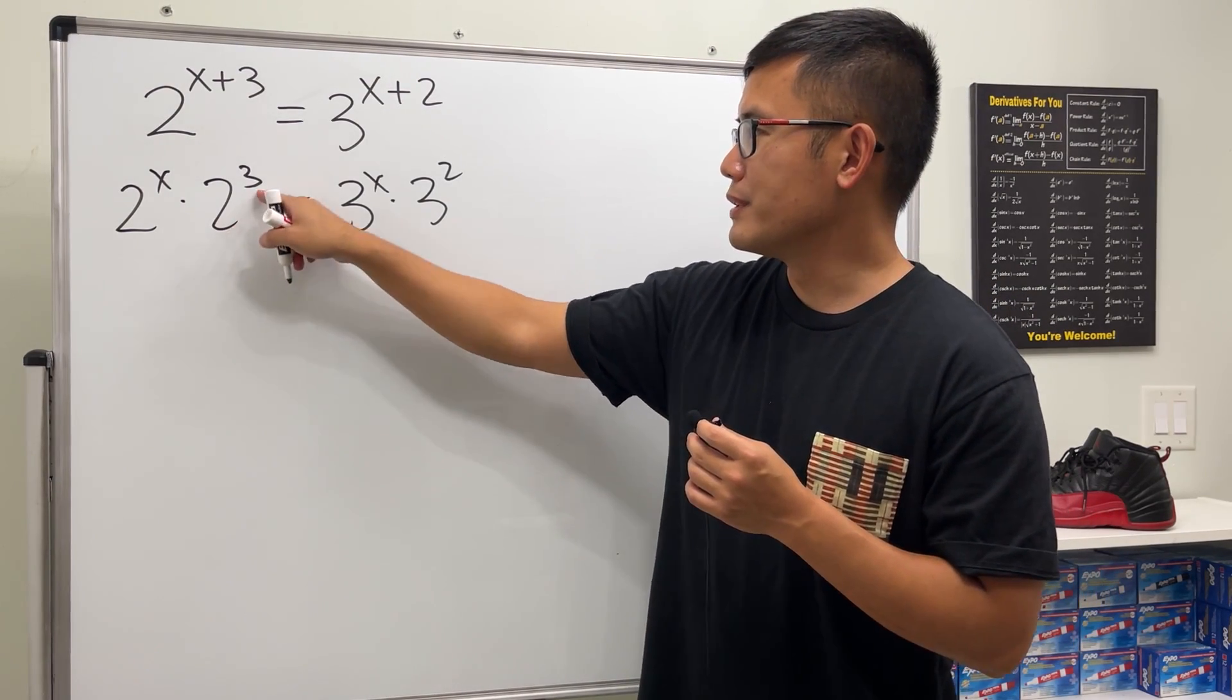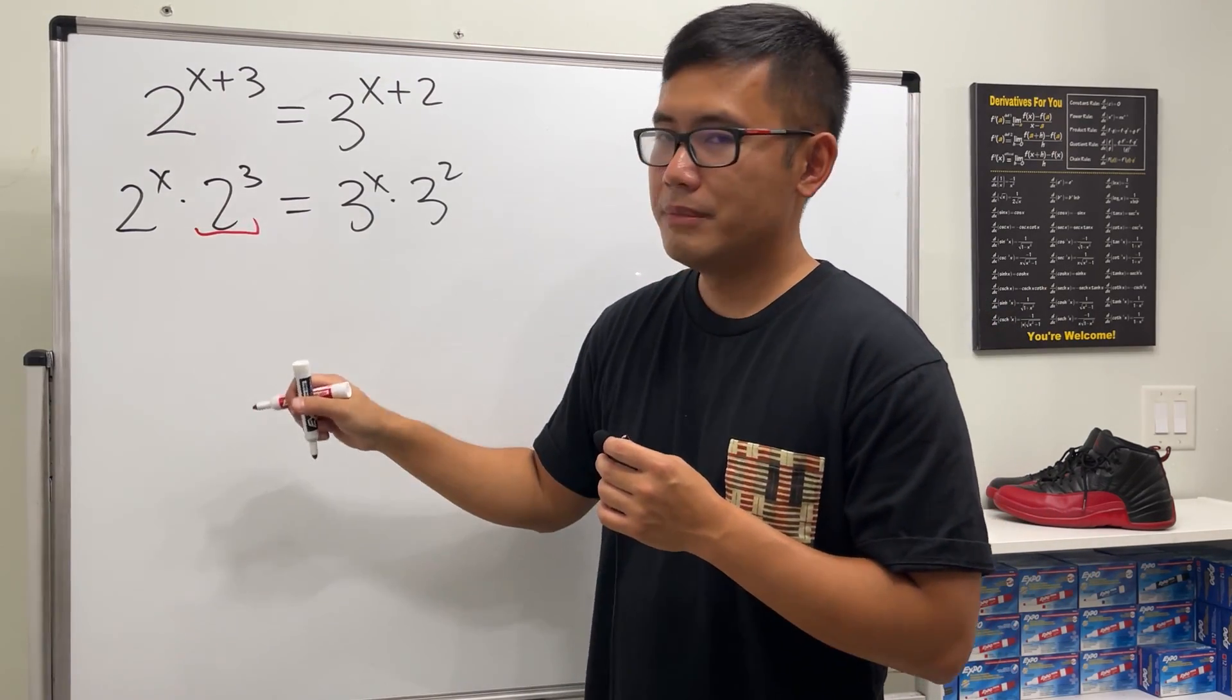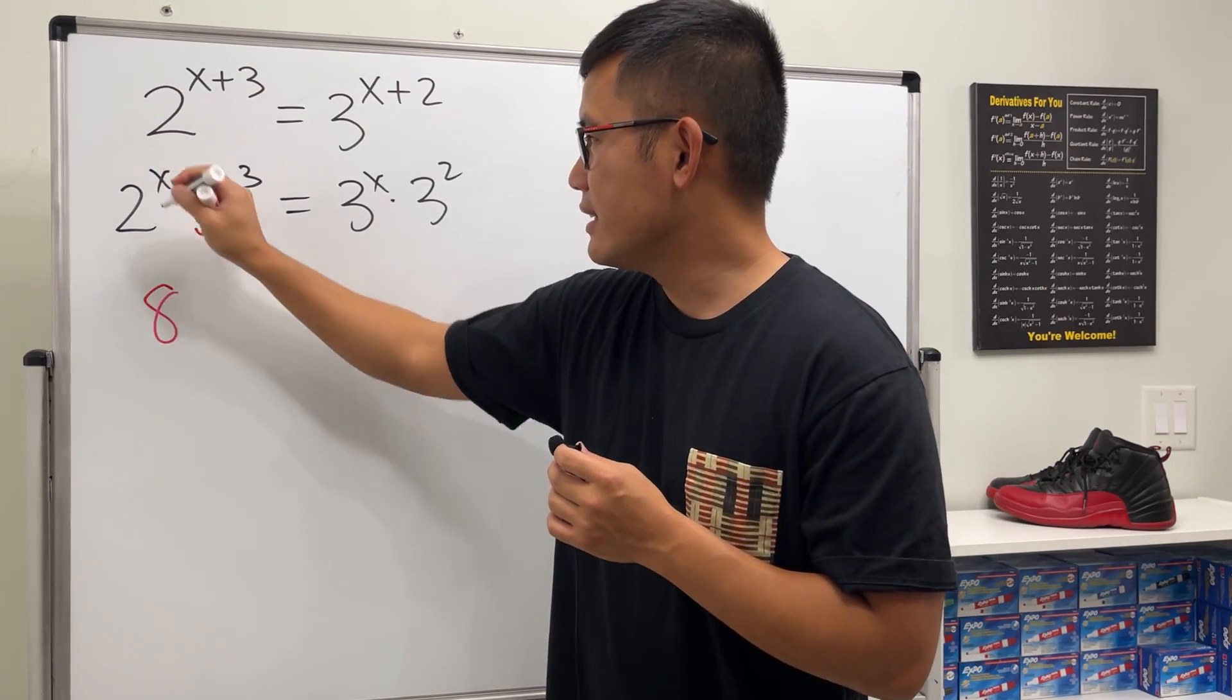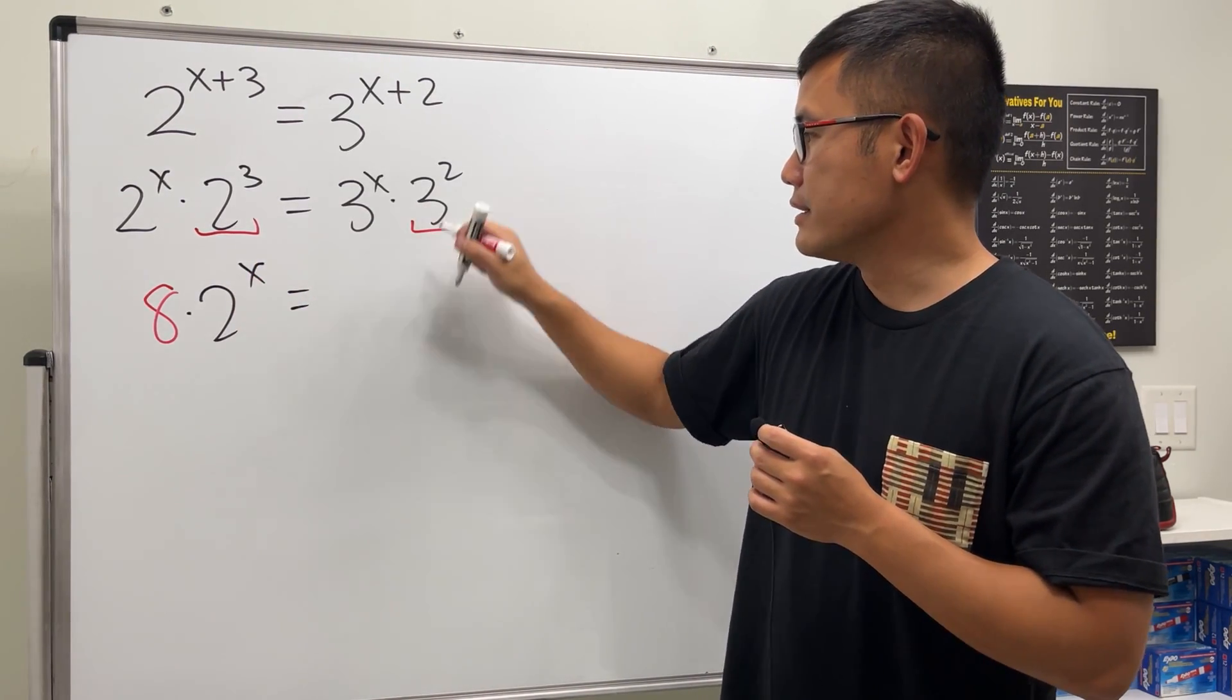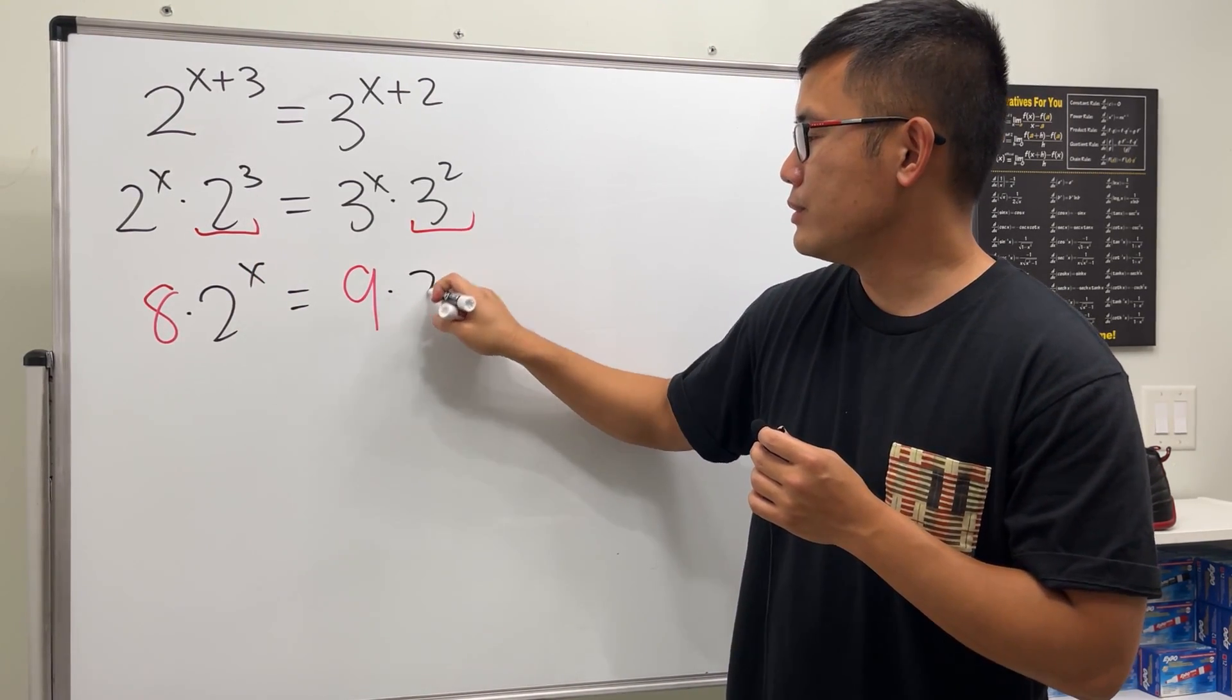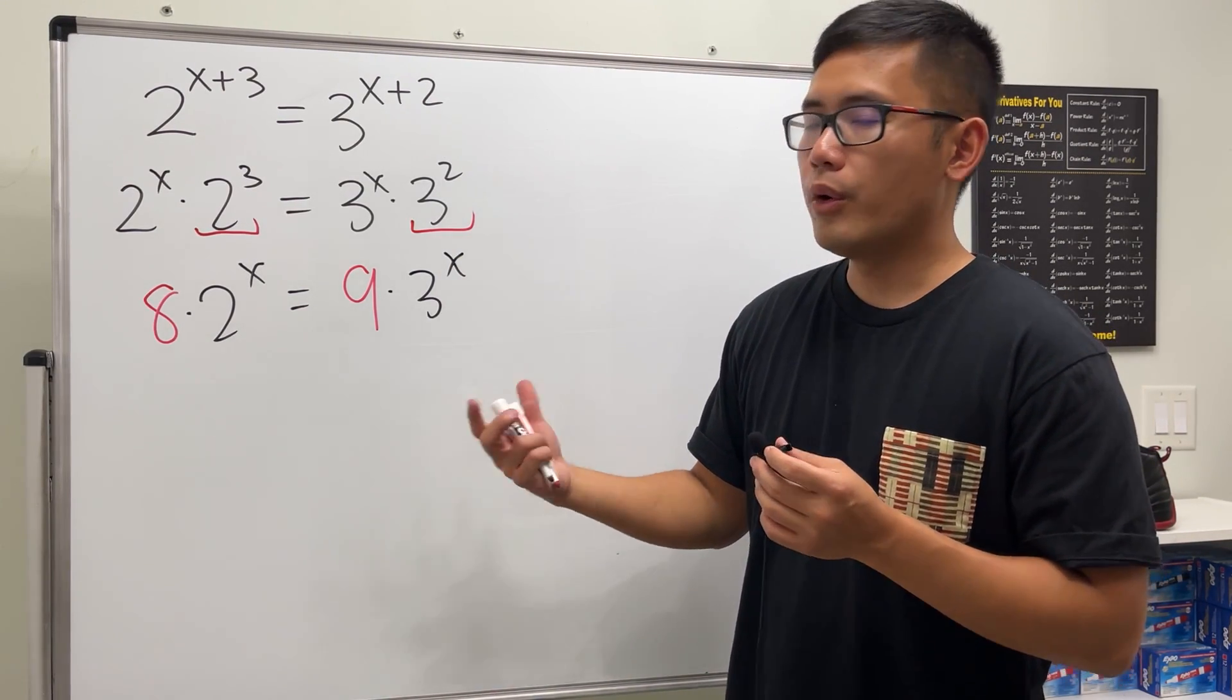Well unfortunately 2 to the third and 3 to the second, they are different values. This right here is 8, so we have 8 times 2 to the x power, and then this right here is 9 times 3 to the x power.